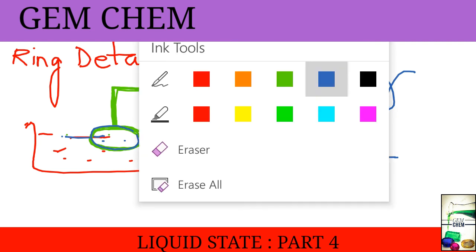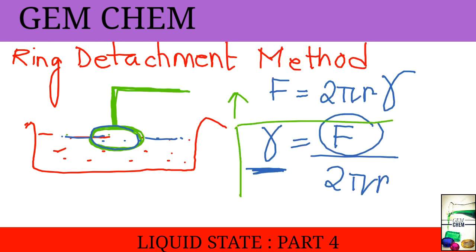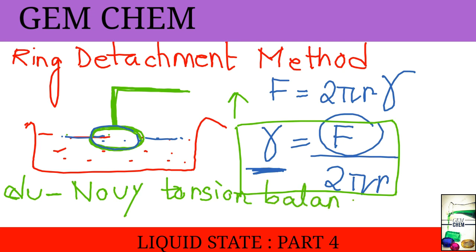This is a precise method and this requires an instrument for measurement and the instrument is known as Du Noüy torsion balance. This is the instrument used to measure surface tension using ring detachment method.